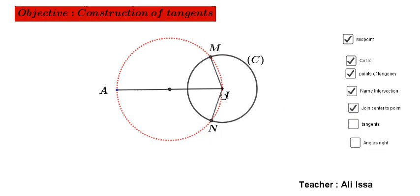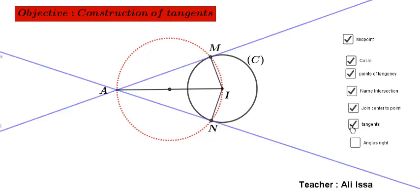Join I-M and I-N. Step number 5. Join the lines A-M and A-N.